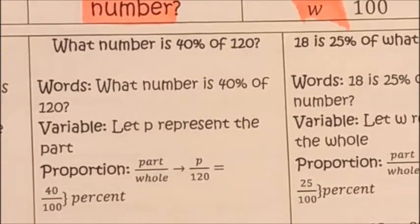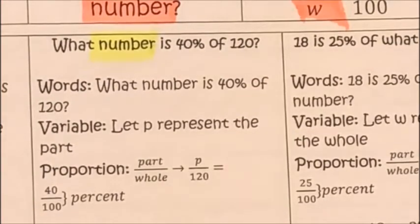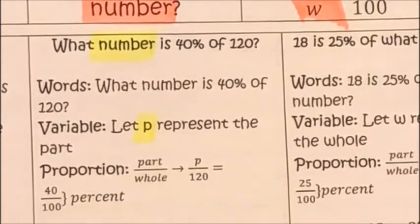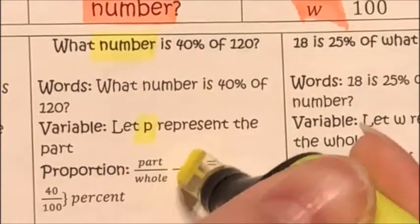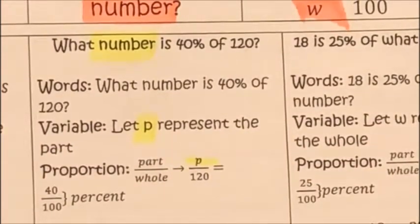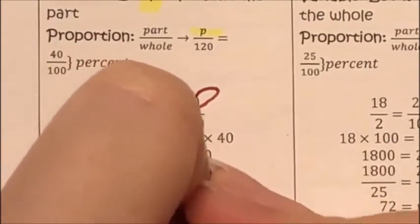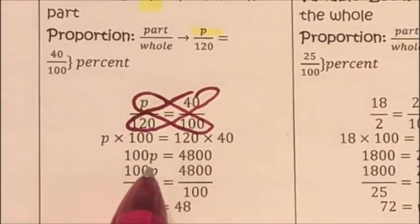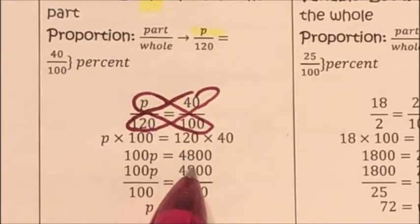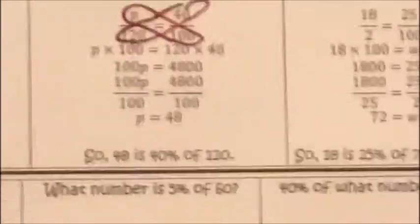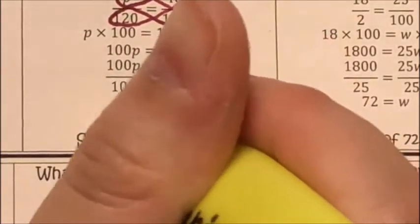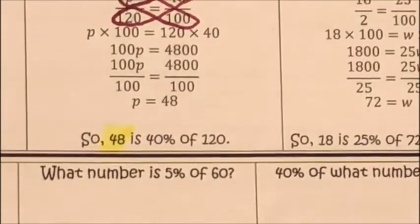Next: what number is forty percent of a hundred and twenty? I'm looking for a part, so I let p represent my part. Setting up the proportion: p over a hundred twenty equals forty over a hundred. Cross multiplying: a hundred p equals four thousand eight hundred. Dividing by a hundred gives p equals forty-eight. So forty-eight is forty percent of a hundred twenty.